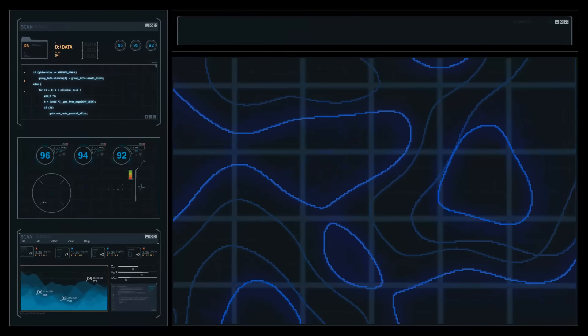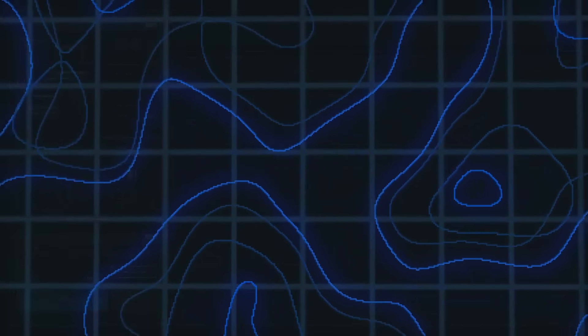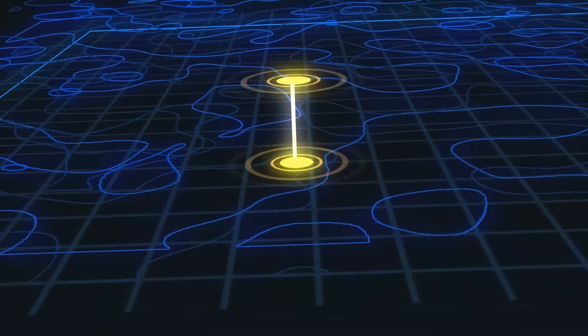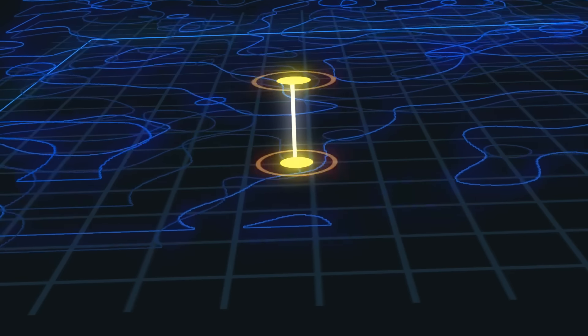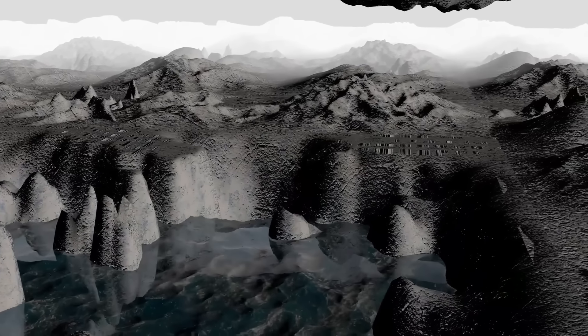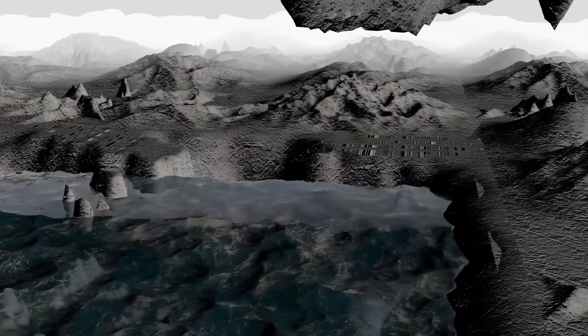Scripps Institution of Oceanography glaciologist Helen Amanda Fricker figured that the elevation changes measured by IceSat happened because of the dynamics of these lakes. They did not hold meltwater statically. Instead, they were filling and draining continuously over time through a system of waterways.